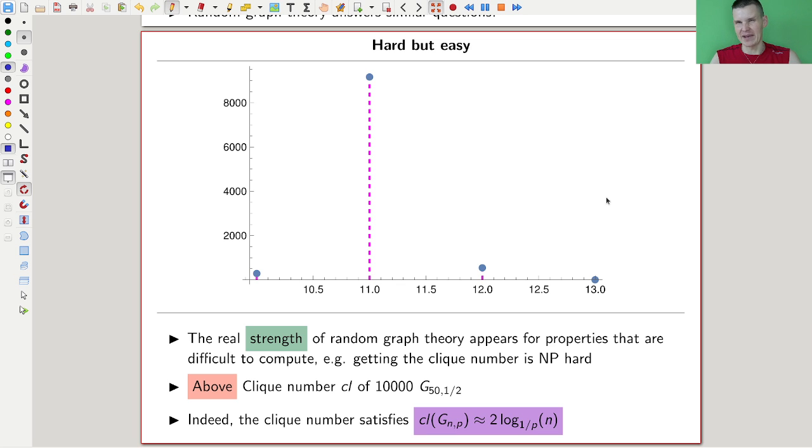But the real strength of random graph theory comes into the game when there is some property that is really difficult to nail down combinatorially, precisely, algebraic, whatever you want. It's the real strength of random graph theory.